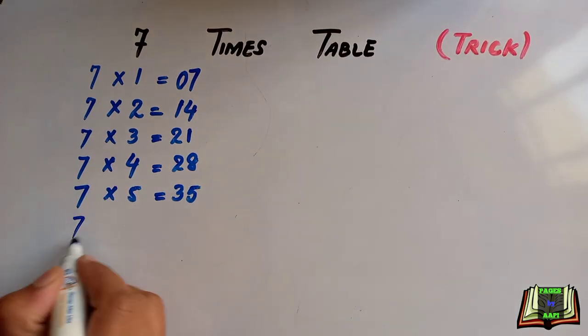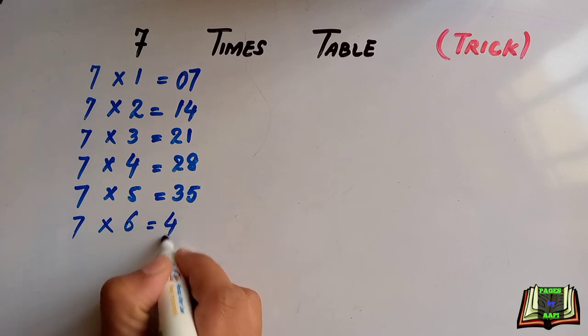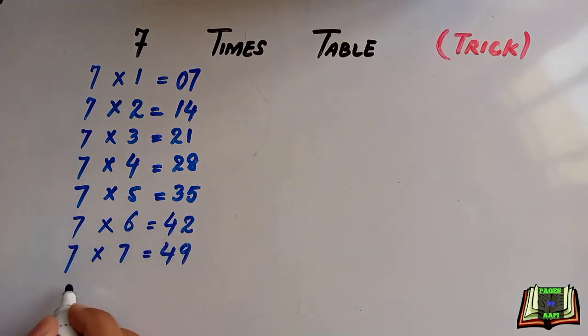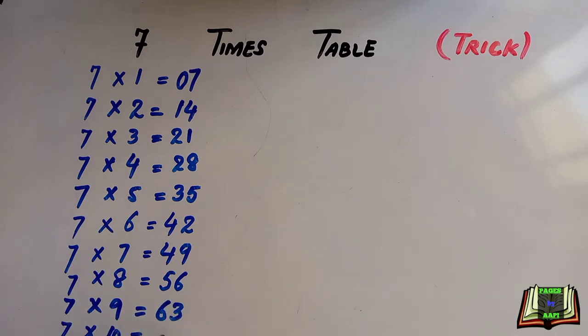7 times 5 is 35. 7 times 6 is 42. 7 times 7 is 49. 7 times 8 is 56. And 7 times 9 is 63. 7 times 10 is 70.